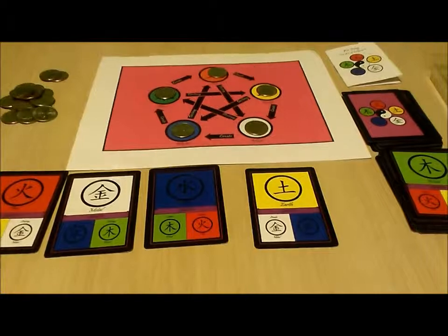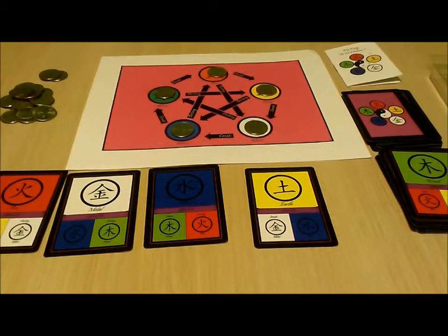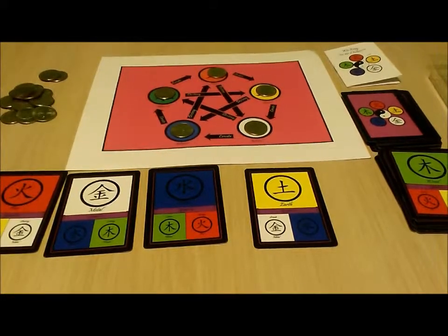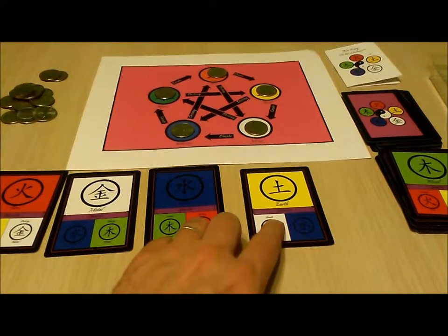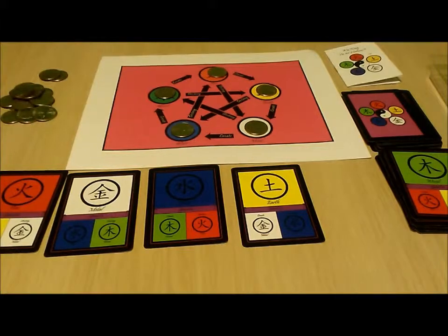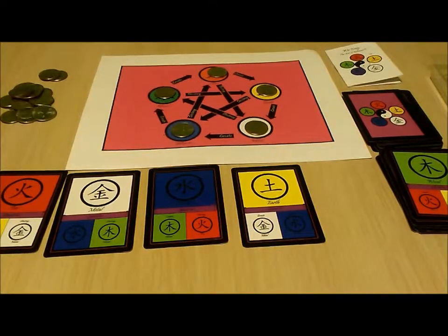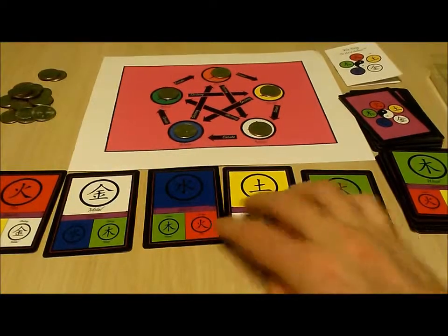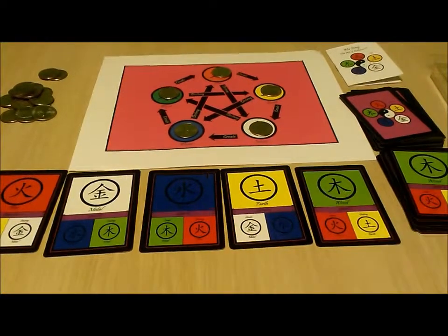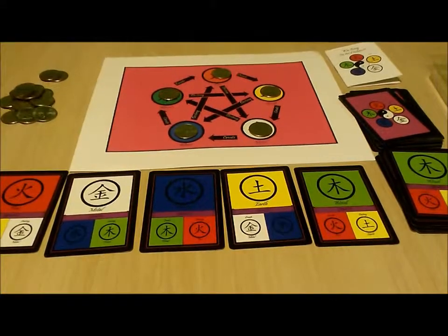So the universe is back in balance with one token on each space and we have a fire card, a metal card, a water card, and an earth card. If we draw a wood card from this heavily stacked demonstration deck we win. And look at that, what are the odds? In a real game, not as good.